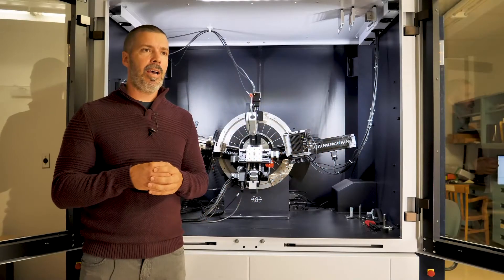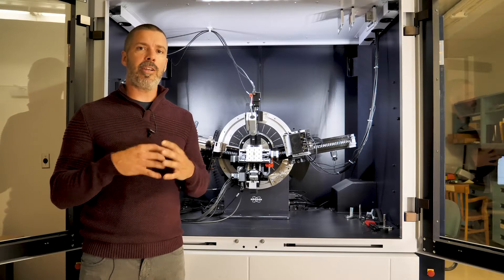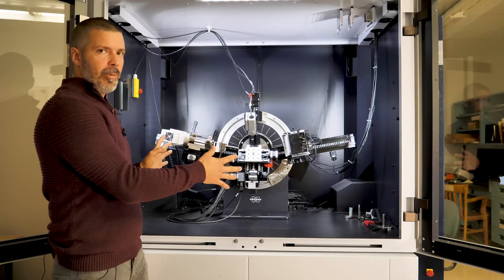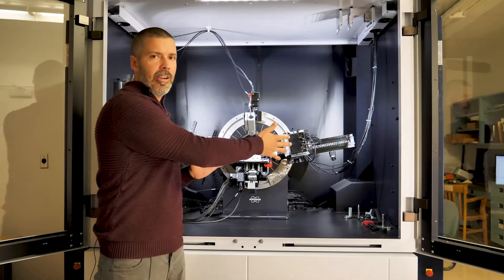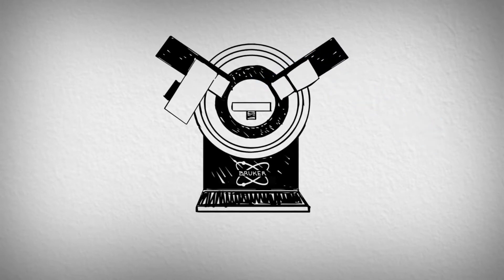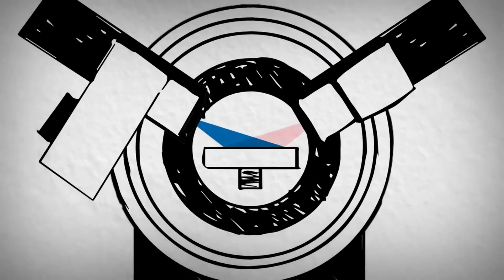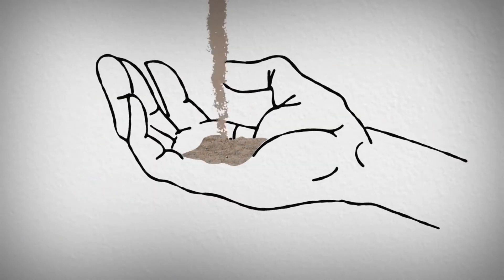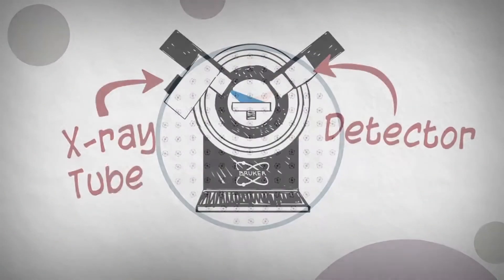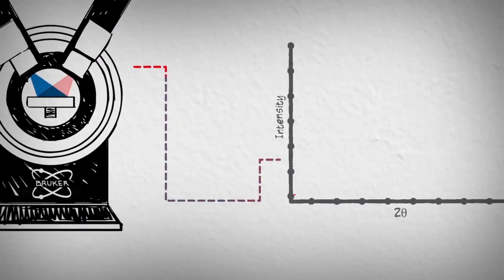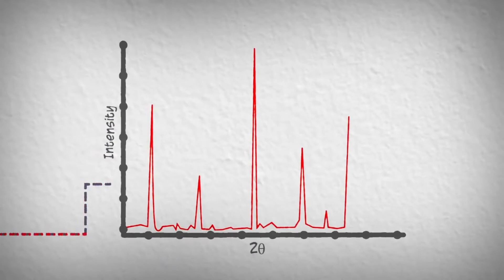It uses an optical experiment called diffraction, which is created inside this instrument and captured by the detector here. Basically, if we want to simplify diffraction, it consists of an x-ray beam that will hit just a tiny amount of powder coming from a mineral specimen, and the image that's captured on the other side of the experiment by the detector becomes the fingerprint or a signature for that mineral for identification purposes.